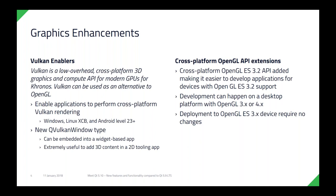Vulkan is extremely useful for adding 3D content into the application. On the graphics side, we've also done an update on the OpenGL API — we now support OpenGL ES 3.2. This enables development of applications for devices with OpenGL ES 3.2, meaning development can happen on a desktop platform on both OpenGL ES 3 and 4 generations. Deploying your application to a platform supporting OpenGL ES 3 requires no changes other than compiling it for that target — the Qt framework will take care of all the dirty laundry for you.